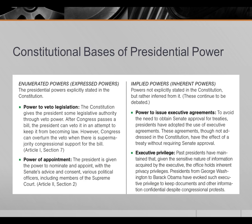Executive privilege is another implied power that many presidents claim, especially in relation to war-making and domestic security matters. Because much military and security information is sensitive — meaning its release would give aid and comfort to the nation's enemies, either within or outside the country — presidents have claimed that a substantial portion of their correspondence and general activities can legitimately and legally be shielded from scrutiny by Congress as well as the public.